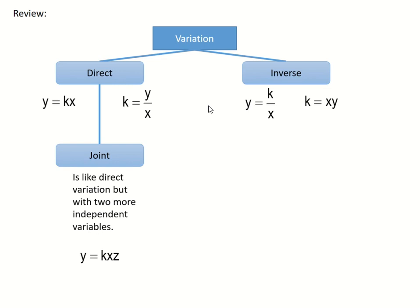So previously, we dealt with these types of variations: direct, joint, and inverse. Now let us compare first direct and inverse. So in direct variation, we make use of the equation y is equal to kx, which is equivalent to the statement y is directly related to x, or y varies directly as x.